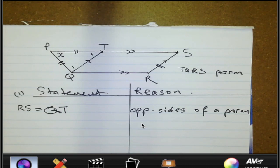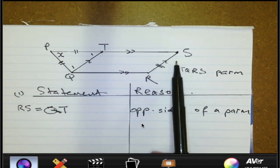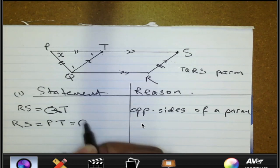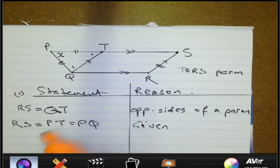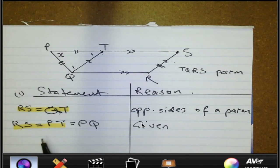RS is equal to PT. We are given that PT, PQ, and RS are equal. We have just proved that QT is the same length as RS. So we can write: RS is equal to PT, which is equal to PQ — this is given. If RS equals QT and RS equals PT, what conclusion can we reach?